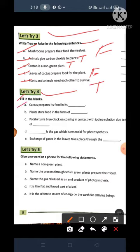Now come to the Let's try Four. Fill in the blanks. A. Cactus prepare its food in its? Cactus prepare its food in its Stem. What you will write here? Stem. Now we plant store food in the form of starch S-T-A-R-C-H Starch. What you will write in the blank? Starch.